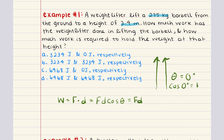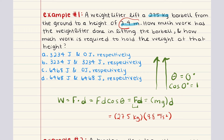The force exerted by the weightlifter is equal to the weight of the barbell, which is the gravitational force acting on it. So we can expand this force term to mass multiplied by acceleration due to gravity — that's Newton's second law — multiplied by displacement. The mass of the barbell is 275 kilograms, the acceleration due to gravity is 9.8 meters per second squared, and the displacement is 2.4 meters.